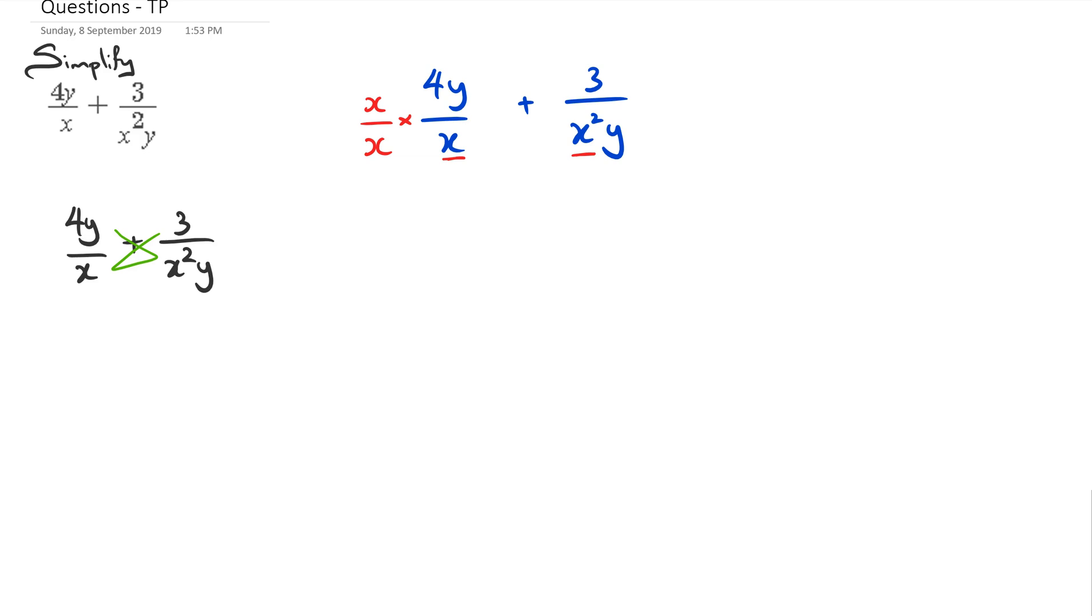Then I have a look at what else am I missing in this left hand side compared to the right hand side. I've got a y here, so that means I need to come back and in the denominator I'm going to multiply by y, which means I've got to multiply in the numerator by y as well.